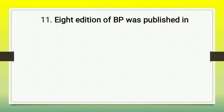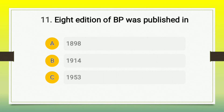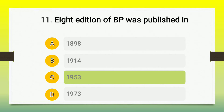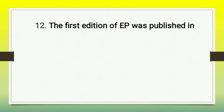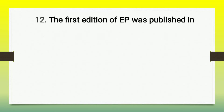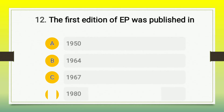Question number 11: the eighth edition of IP was published in — A) 1898, B) 1914, C) 1953, D) 1973. The right answer is option C, 1953. Then the next question: the first edition of European Pharmacopoeia was published in — A) 1950, B) 1964, C) 1967, D) 1980. The correct answer is option C, 1967.